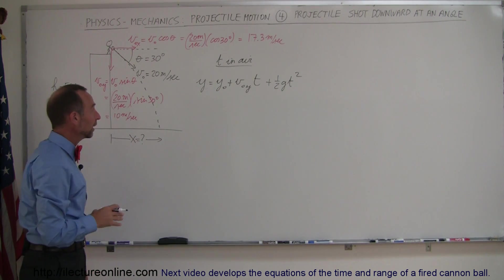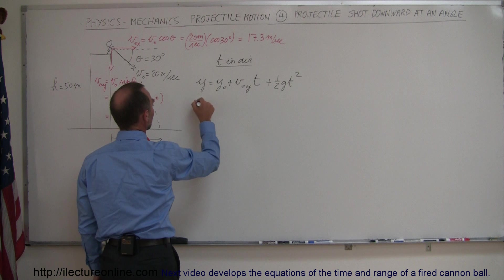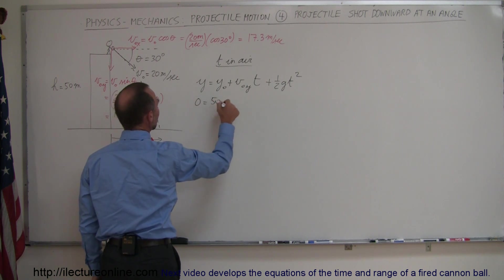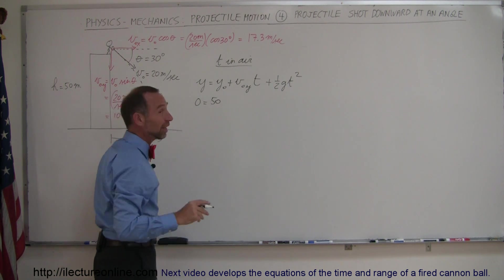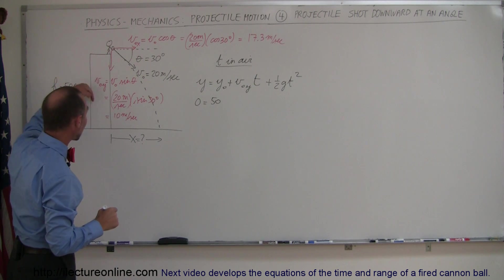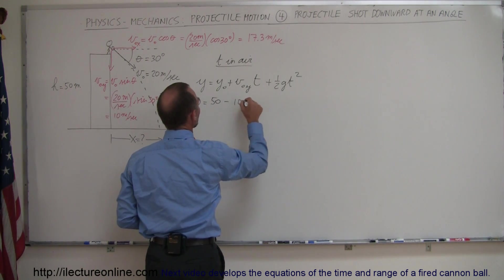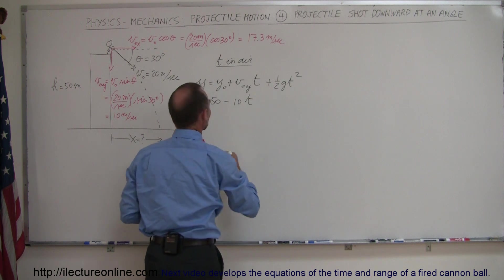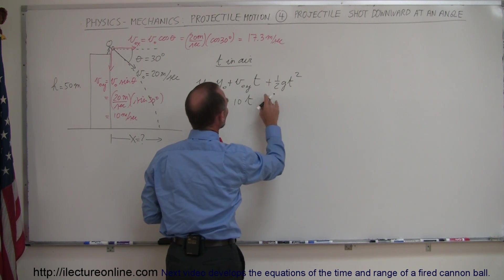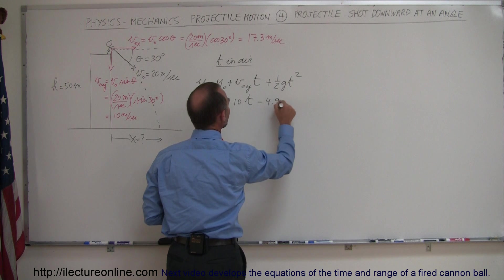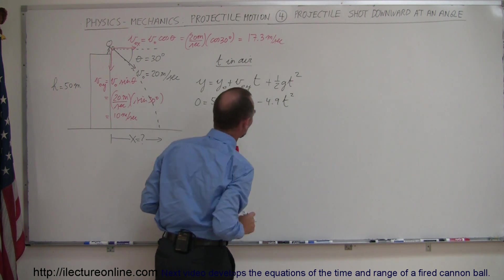All right, now when we plug these numbers in: final height 0, initial height 50, initial velocity in the y direction. Now notice that this is in a negative direction, so therefore that becomes minus 10 meters per second. We're not accelerating, and then here this would be minus 4.9, and that is meters per second squared.